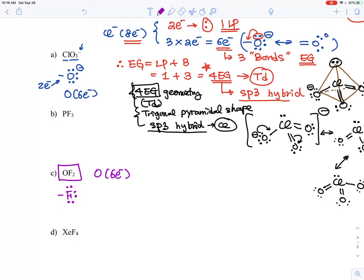They need one electron because fluorine is a seven valence electron. Therefore, among six electrons, two electrons are being used to form bonds, two bonds with fluorine.